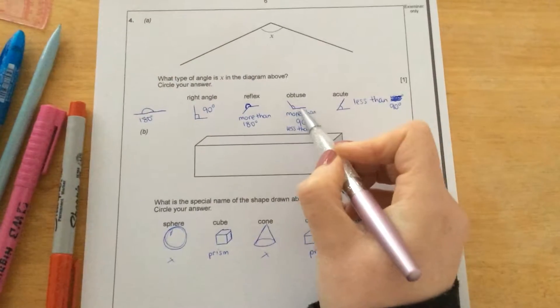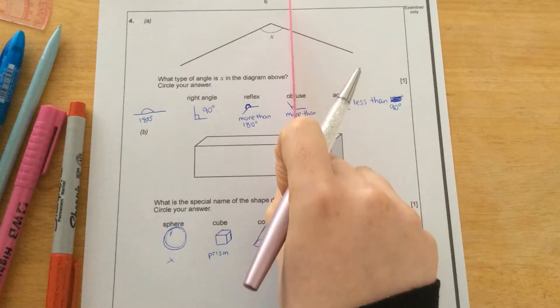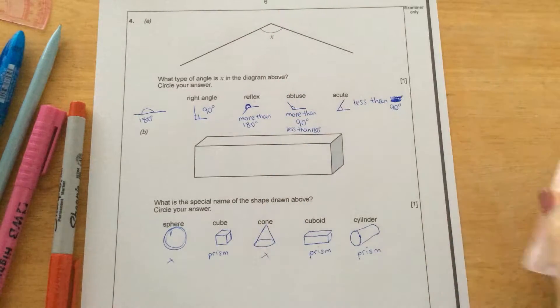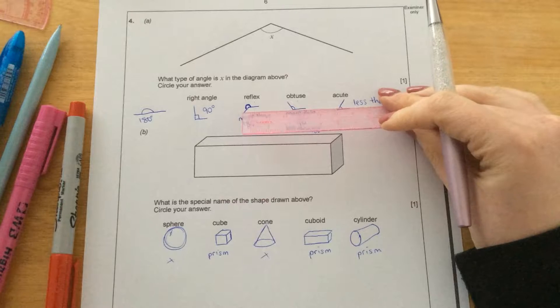Obtuse, so that is more than 90 degrees, because if it was 90 degrees, it would be straight up here, but it's not. It's more, but it's not as big as 180 degrees, which would be a straight line.